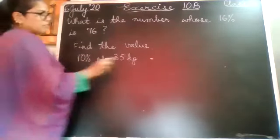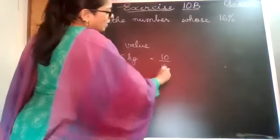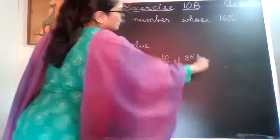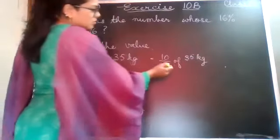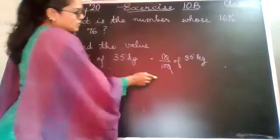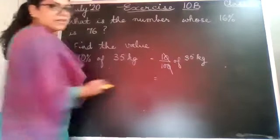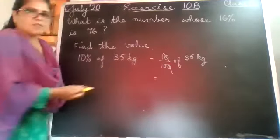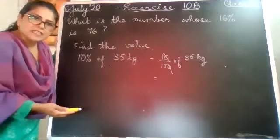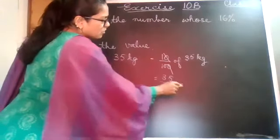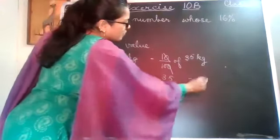10% of 35 kg will be 10 upon 100 of 35 kg. Then you will reduce the zeros; both are divisible by 10. What is left? 35 upon 10. You can reduce this further, but because it is a decimal fraction, it is easy for me to write it as a decimal number. So I am not reducing it. It will become 3.5 kg.